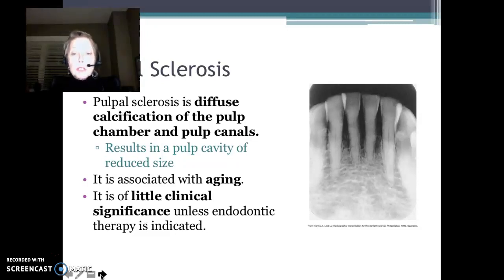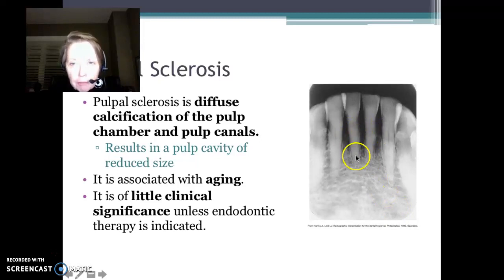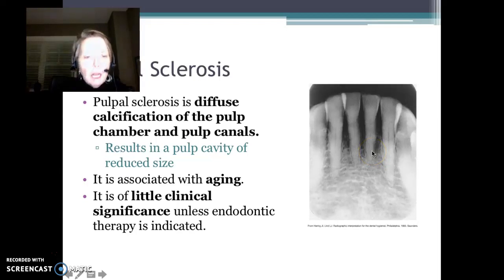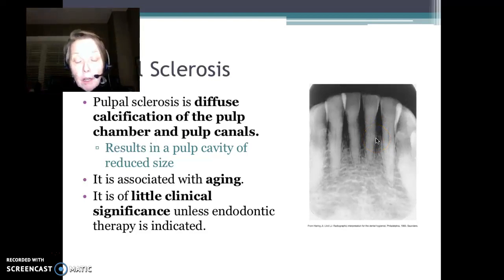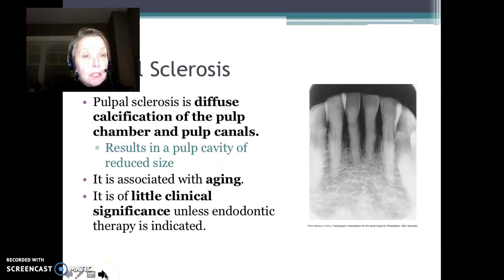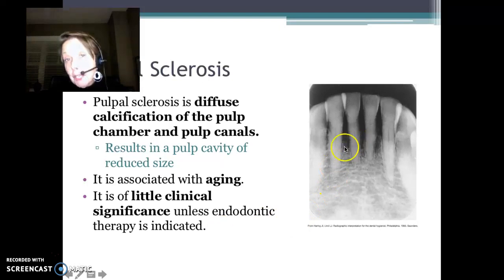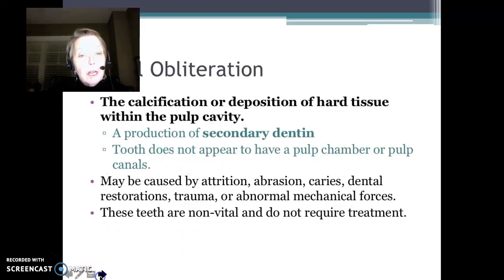Pulpal sclerosis is a diffuse calcification of the pulps. Take a look at teeth 24 and 25 and just how very thin the pulp canal or pulp chamber has gotten. That's a result of aging — as we age, the pulp chamber narrows. No clinical significance unless root canal treatment is required, because then it's pretty hard to get into those canals. But typically, no clinical consideration.